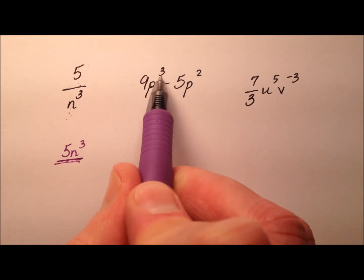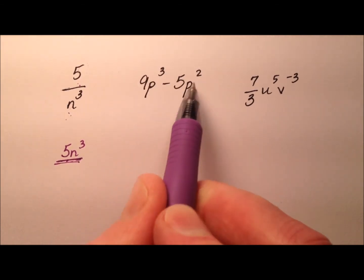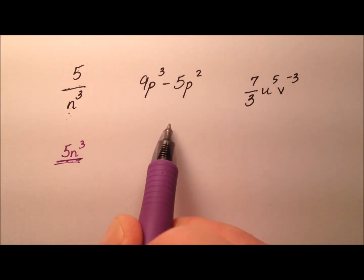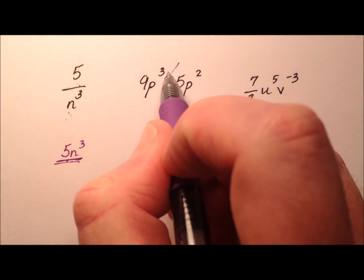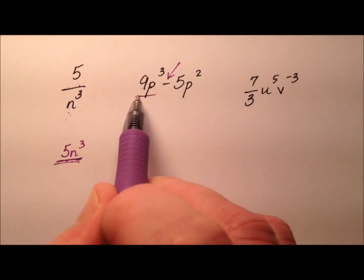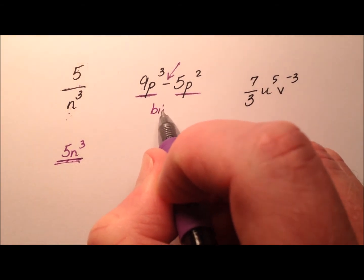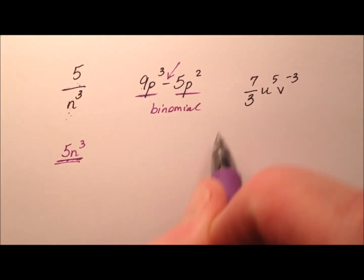So the next one is 9p cubed minus 5p squared. Well, it looks like we have numbers and variables, and those variables have whole number exponents, but we have this subtraction sign in the middle. So this is not a monomial because we have one, two terms. This is actually a binomial, so not a monomial.